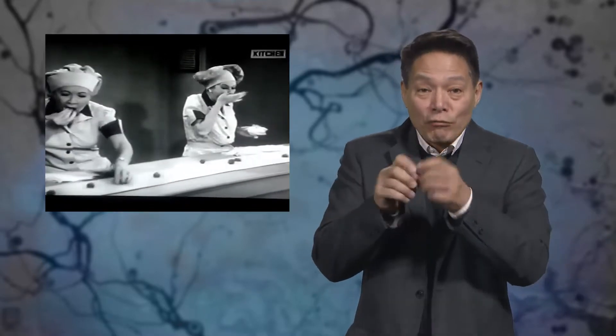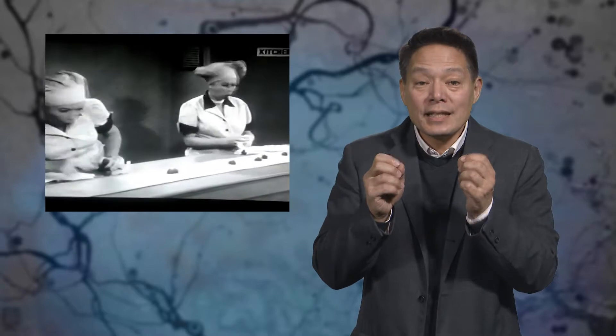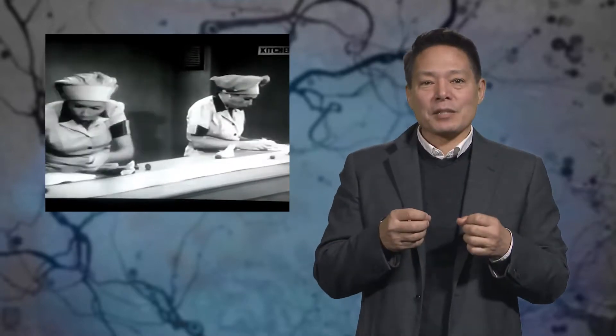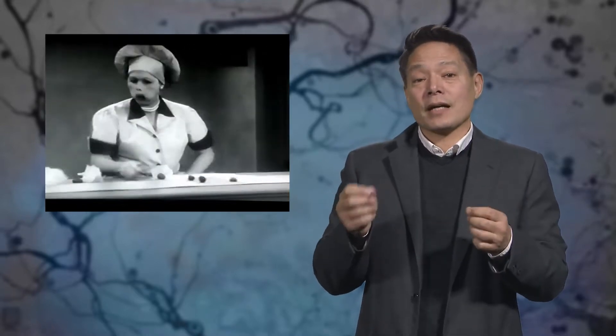I think the attentional blink happens because attention has to transfer a letter from the visual system to working memory, during which time it cannot transfer another letter because the transfer itself takes time. A humorous metaphor for this is shown here where Lucille Ball is trying to wrap chocolates as they go by, but as she does this process, she misses other chocolates. This is like consciousness missing the letter C after having registered the prior occurrence of the letter R.